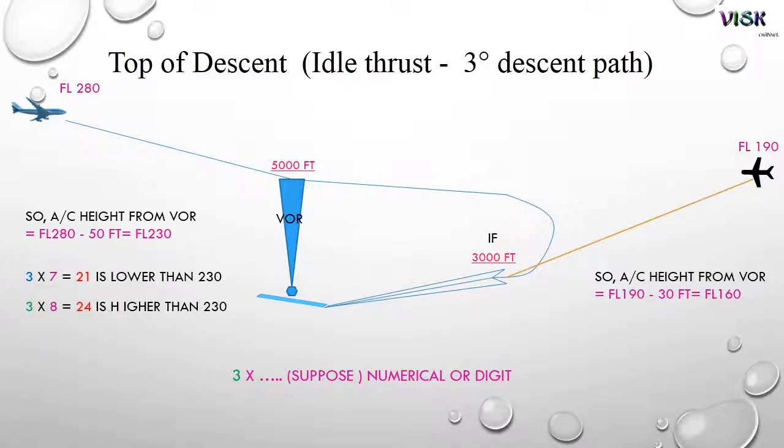If 3 multiplied by 7 equals 21, which is lower than 230, and 3 multiplied by 8 equals 24, which is higher than 230. So we use the middle, 7.5, which equals 74 or 75 nautical miles, the top of descent.